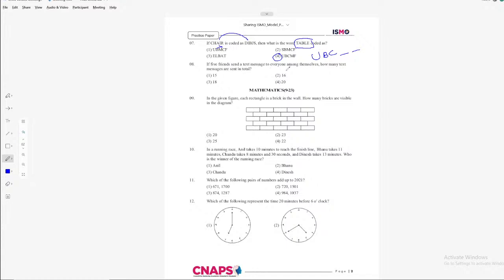Let's do question number 8. If 5 friends send a text message to everyone among themselves, how many text messages are sent in total? So for example, if there are 4 friends, each friend sends 4 messages to the 4 friends. But here there are 5 friends send a text message to everyone. Every other person among themselves. So how many? If A is the first person, B, C, D, E. Each of them sending to other 4. B sends to other 4. A sends to other 4. C sends the message to the other 4 and so on. 5 of them sending 4 messages to 4 friends. 5 fours are 20. So totally there will be 20 messages being sent.